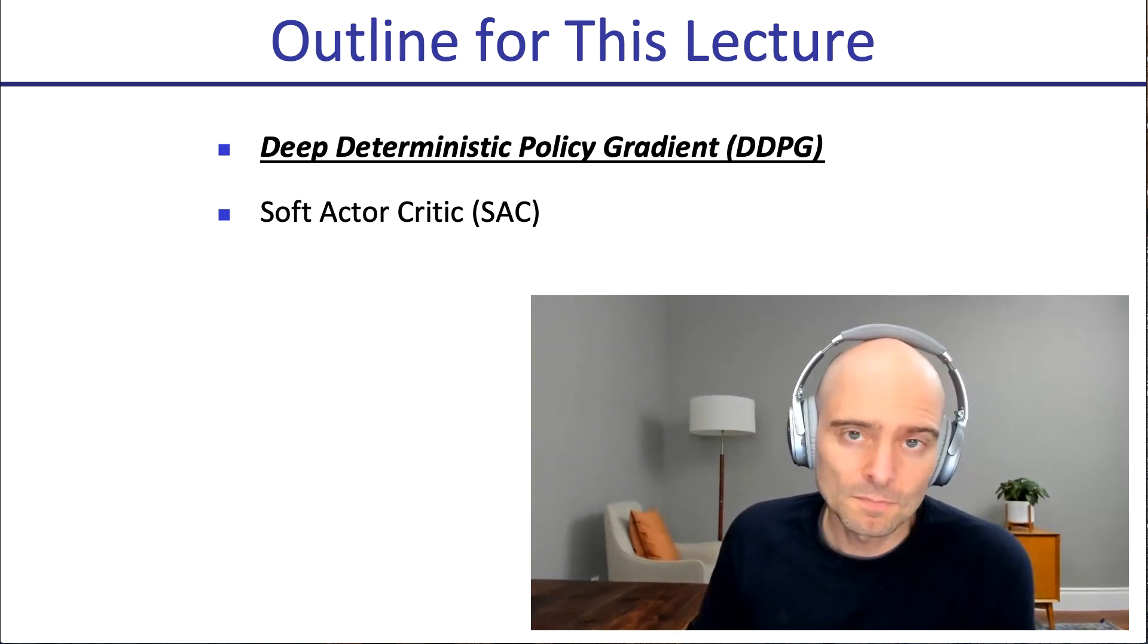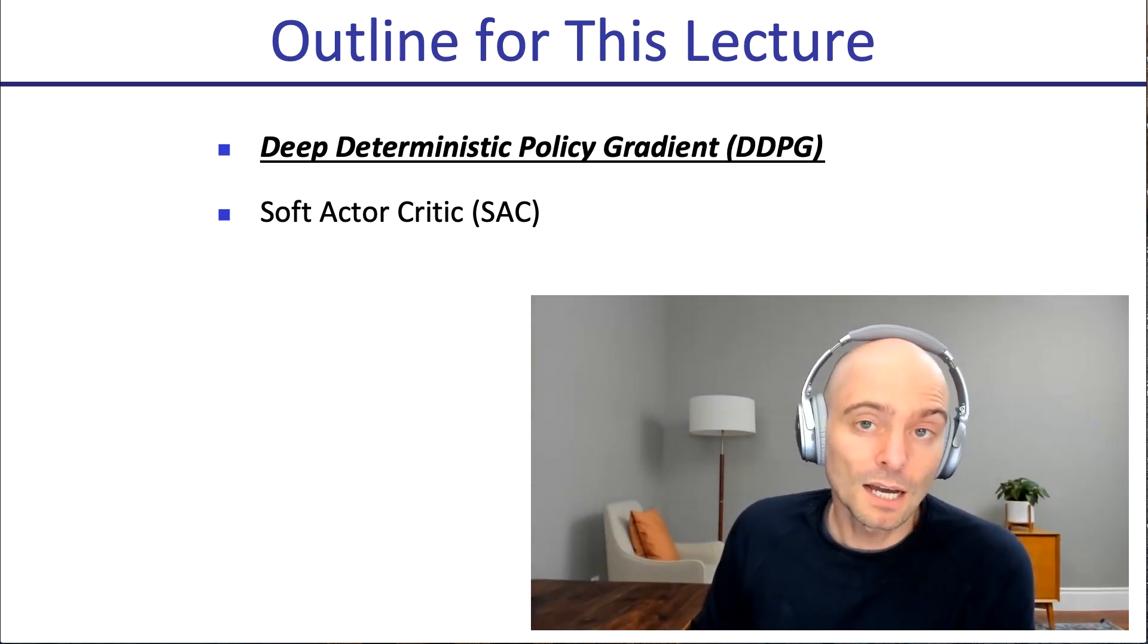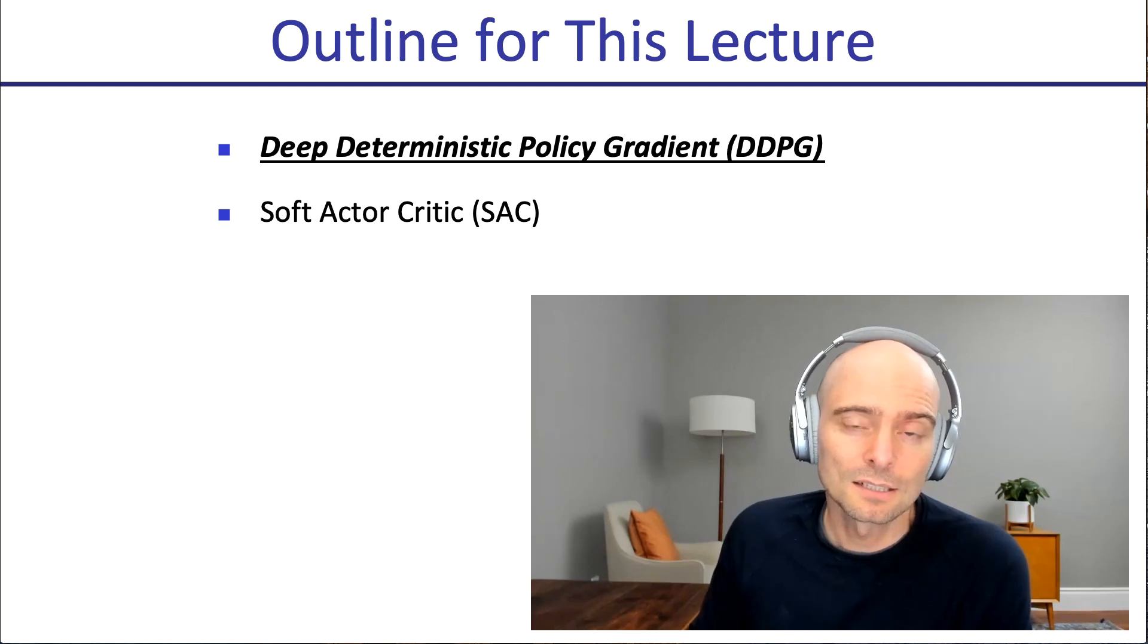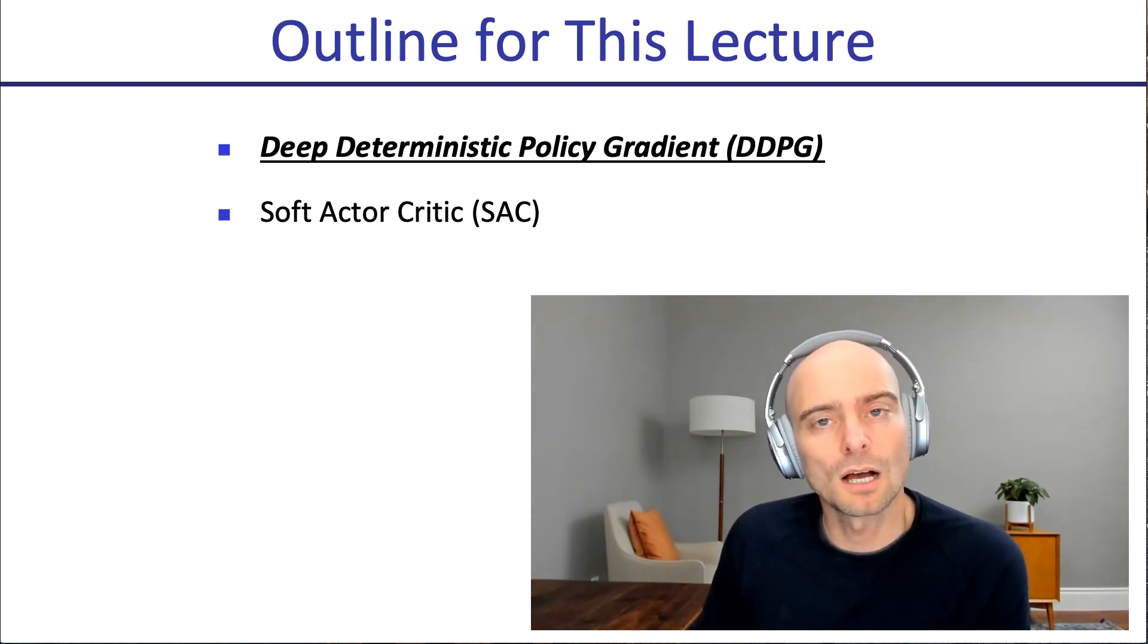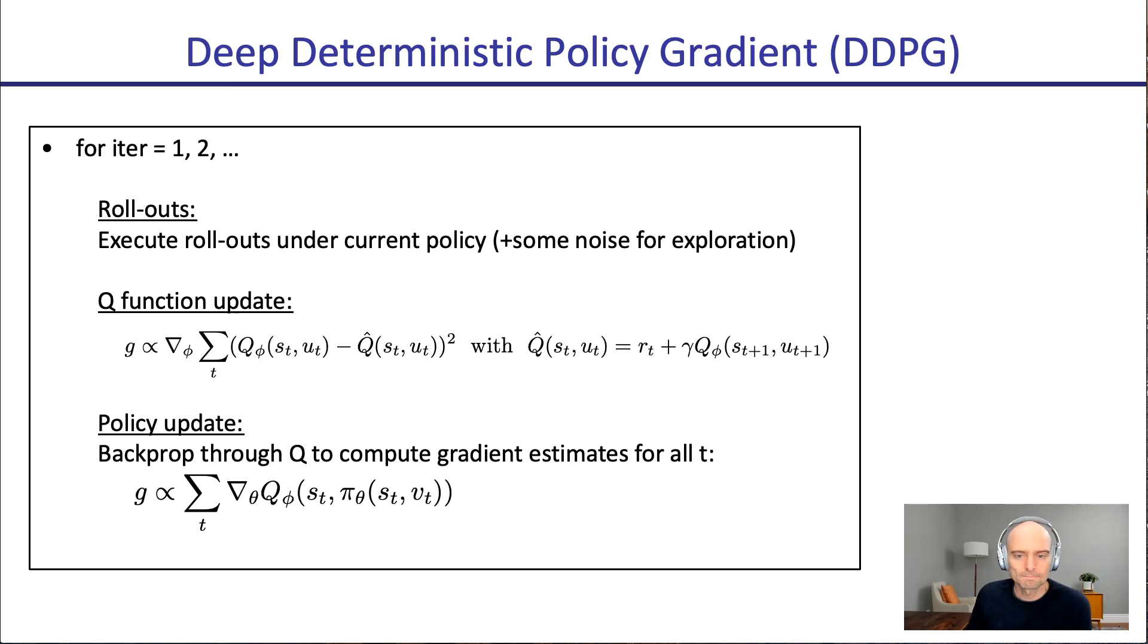So we'll start with DDPG and then we'll go to SAC. At a high level, you can think of SAC as the maximum entropy version of DDPG. In fact, at every level, you can think of it as the maximum entropy version of DDPG. So let's start with DDPG. How does it work? You get rollouts under the current policy, plus maybe some noise to make sure there's exploration if your policy is not naturally stochastic or something.